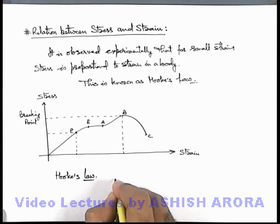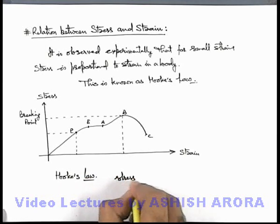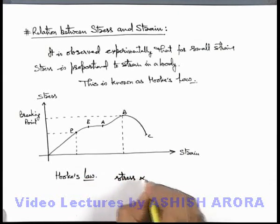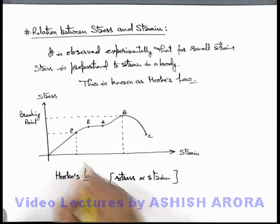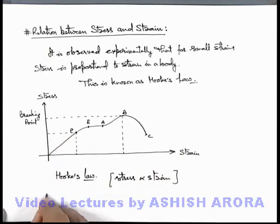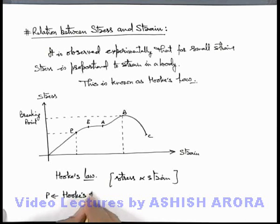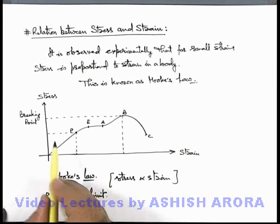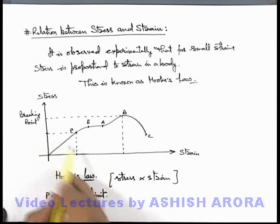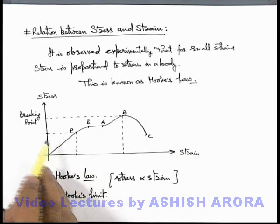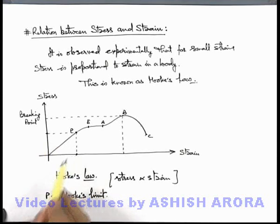Hooke's Law can simply be written as: stress is directly proportional to strain. Point P can be written as Hooke's limit. Hooke's limit implies that up to point P, when stress is being applied, strain will be proportionally varying with the stress, or stress will be proportionally varying with the strain.